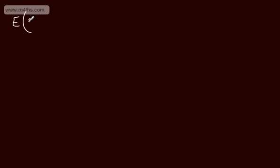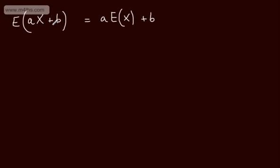We've seen in previous videos that adding a constant to each value in a data set increases the mean by that value, and multiplying each item by a factor of a multiplies the mean by a. It follows that E(aX + b) = a·E(X) + b. This is a general result you can quote — it's a linear function of the mean.